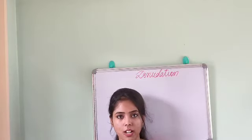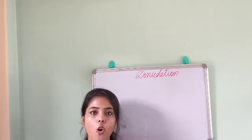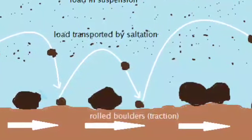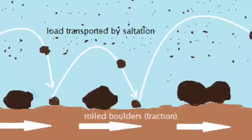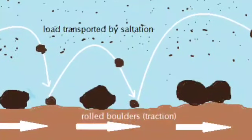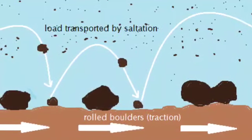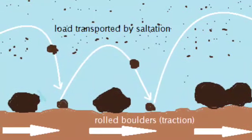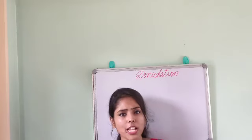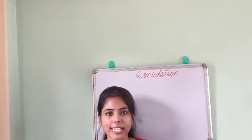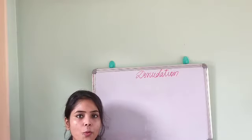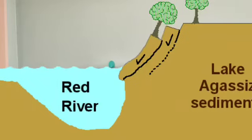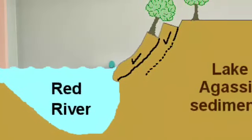Transportation means rock material is being transported by agents of exogenic processes like wind, rivers, glaciers, and so on. Erosion and transportation are quite similar, but they are written separately in your textbook. Then there is mass wasting.